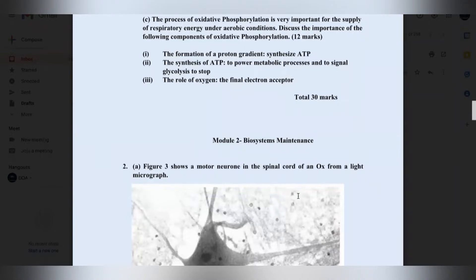Next, the process of oxidative phosphorylation is very important for the supply of respiratory energy under aerobic conditions. Discuss the importance of the following components of oxidative phosphorylation for 12 marks. So this is three. I'd like to think that each of these would be worth four marks. The first one, the formation of a proton gradient. The second one, the synthesis of ATP. The third one, the role of oxygen. Let's begin to talk about some of the points that we would include in our discussion.